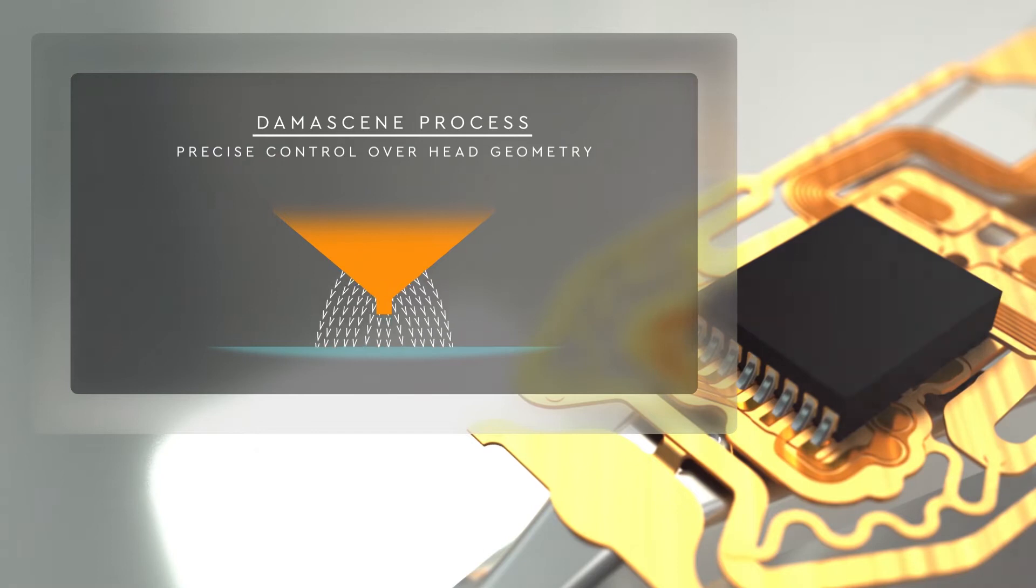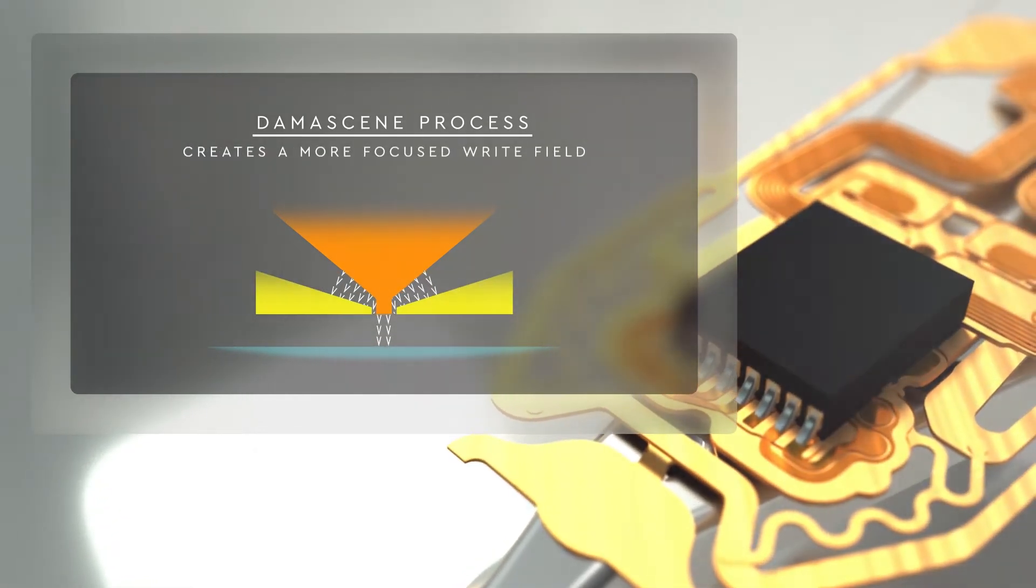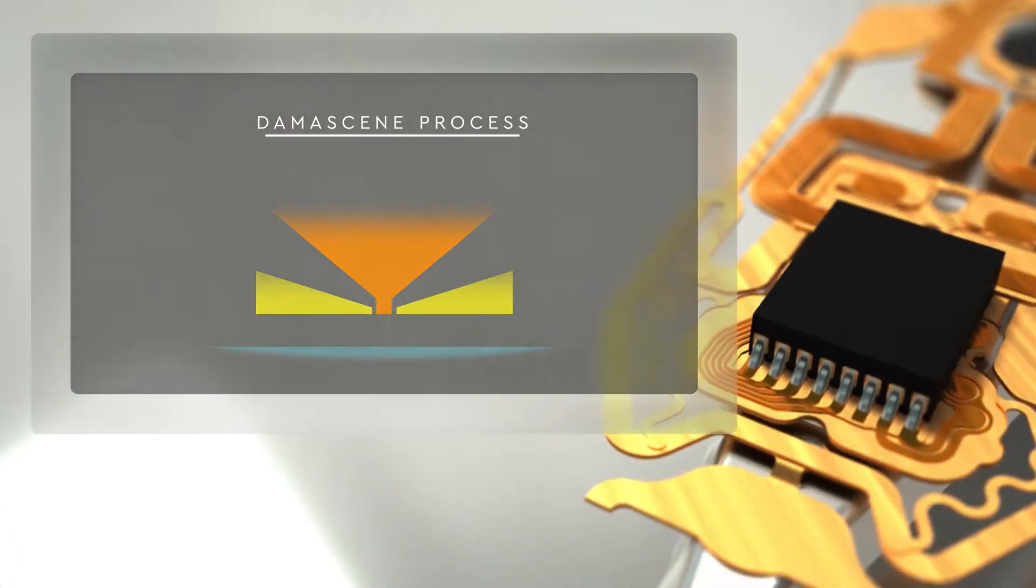The Damascene process enables the formation of a full wraparound shield that helps to focus the magnetic field onto the target area being written while reducing interference on adjacent tracks.